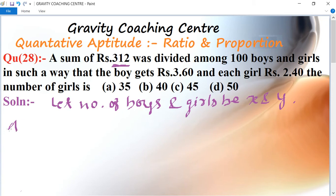According to the question, the total number is 100, so x + y = 100. This is the first equation.